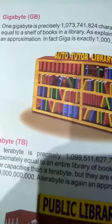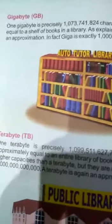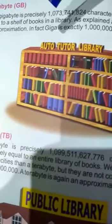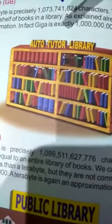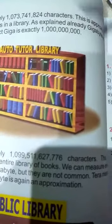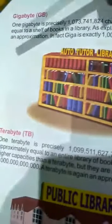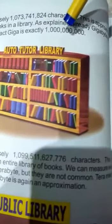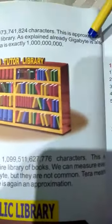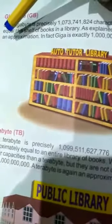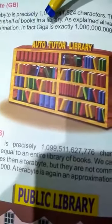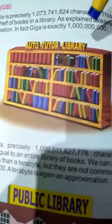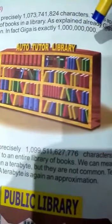GB stands for gigabyte. One gigabyte is precisely 1,073,741,824 characters. This is approximately equal to a shelf of books in a library. As explained, gigabyte is also an approximation. In fact, Giga is exactly one billion — that is, one followed by nine zeros.